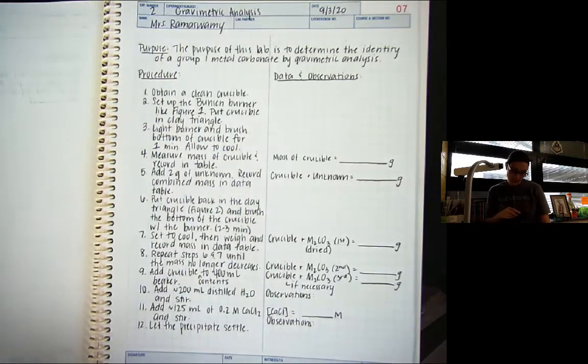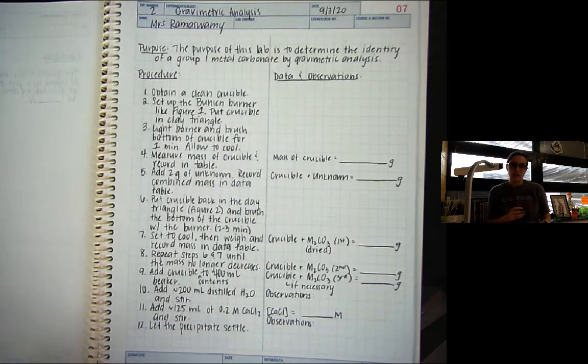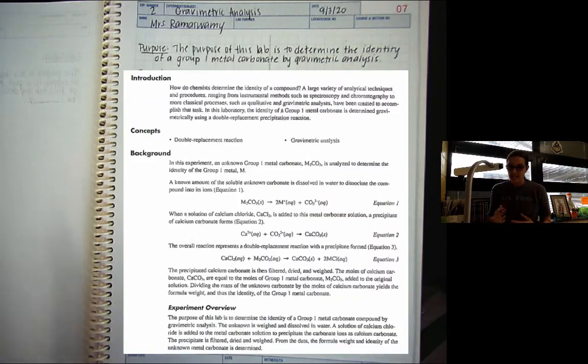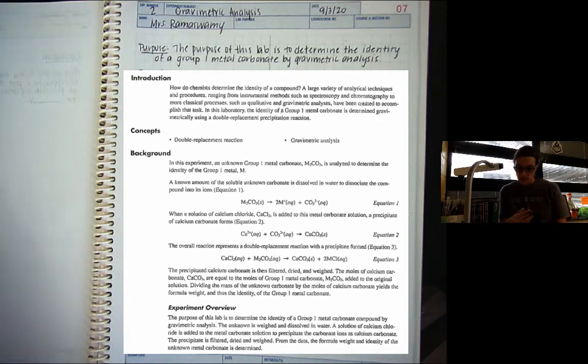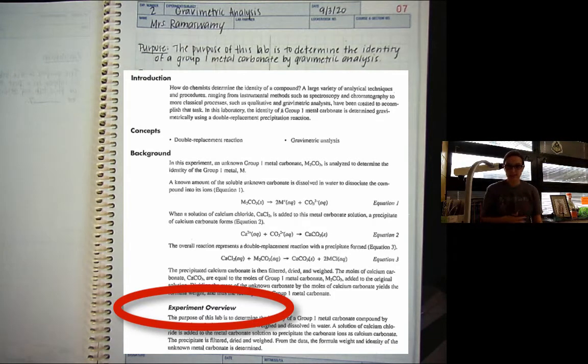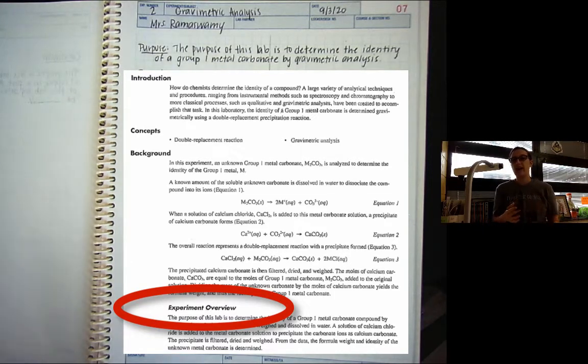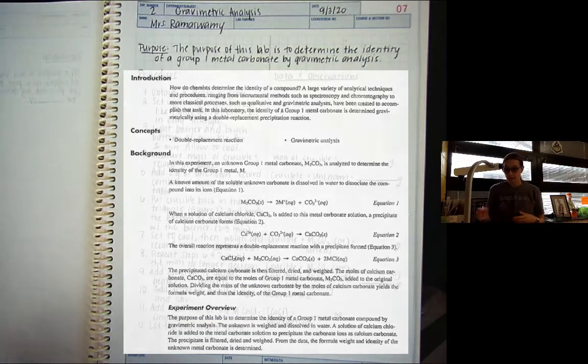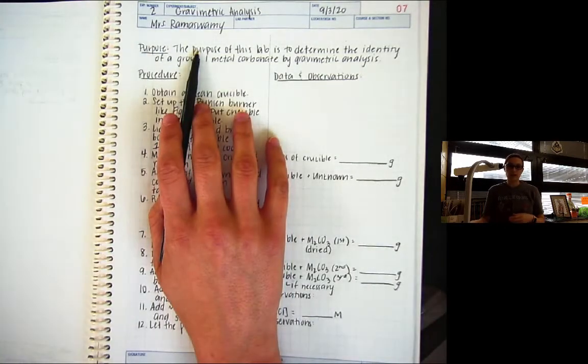In this lab, this is a little bit different in that it didn't outright say the purpose of this lab. Instead, it was in the background information. In the background information, there was a section that said experiment overview. That's another word for purpose. So you want to make sure that you read that so that you know exactly what you're doing. And that's what I used to paraphrase the purpose.